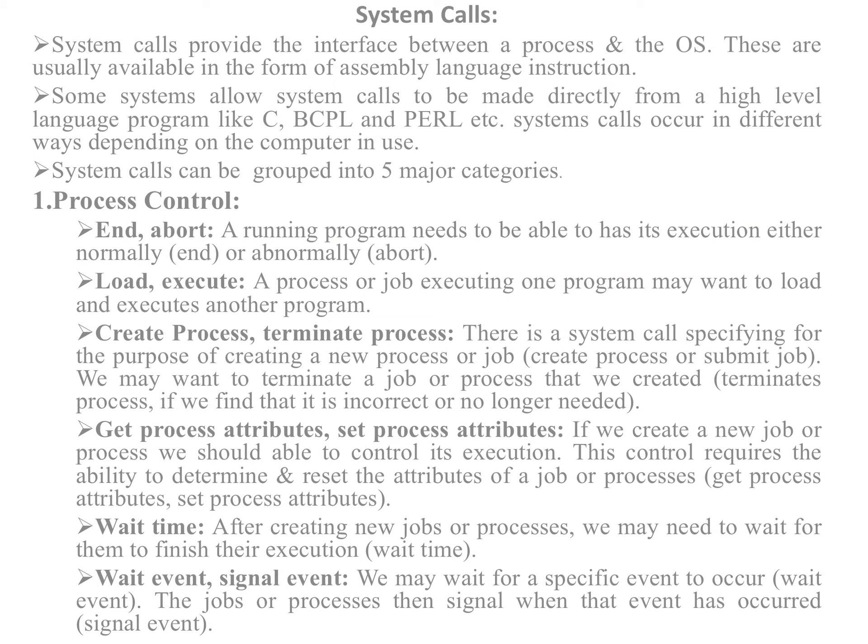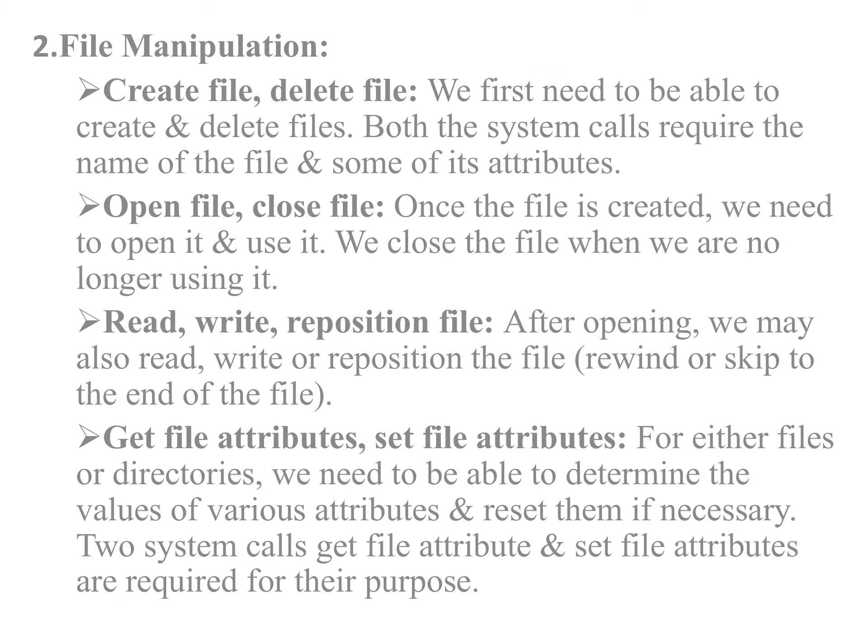Next is wait event and signal event. We may wait for a specific event to occur, and the job or process then signals when the event has occurred. This system call is used for the execution of data-related processes.